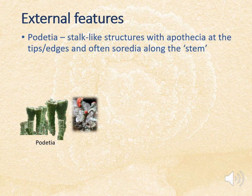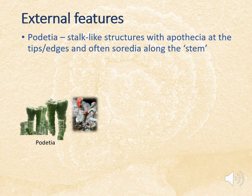Other features include podetia, which are characteristic of certain families of lichens, in particular the Cladonia group. These can also have apothecia around the rims or on the tips of the podetia. The final feature I'm going to introduce are rhizines — not associated with reproduction, but providing lichens with anchorage to a surface. Rhizines are hair-like structures on the underside of the thallus and vary in form between species, so they can be useful as a taxonomic character.